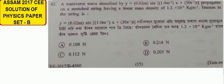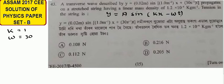k is equal to 1 and omega is equal to 30. Therefore, the wave equation is y equals A sin kx minus omega t.